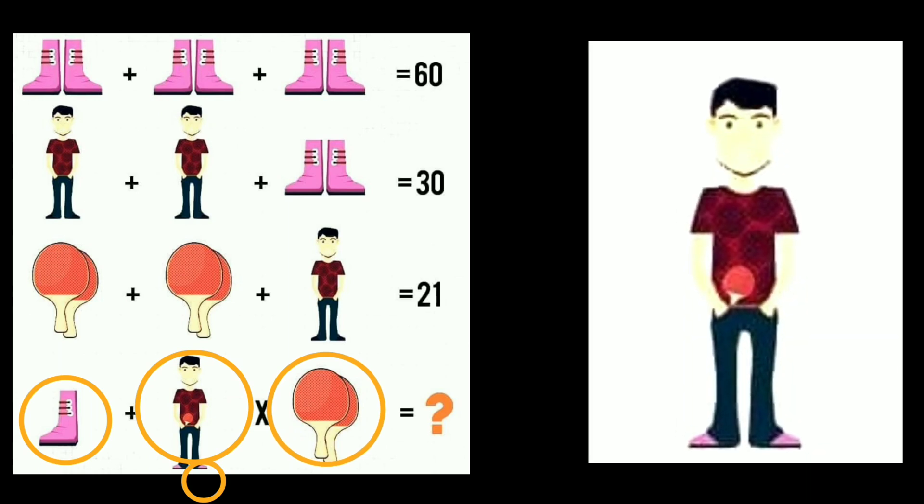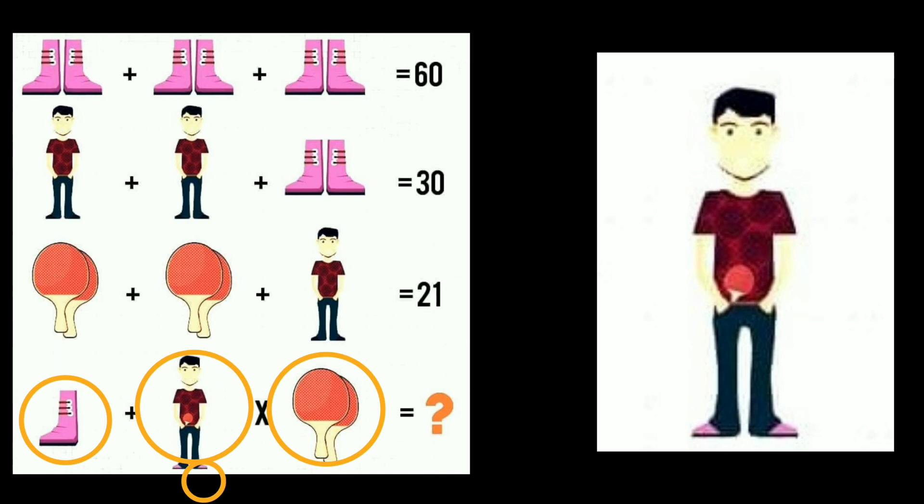So what's the value of a pair of shoes? 20. The value of one shoe is equal to 10. And the pair of badminton is equal to 8. Now, the value of this boy is equal to how much? What is the value of the boy? 5.